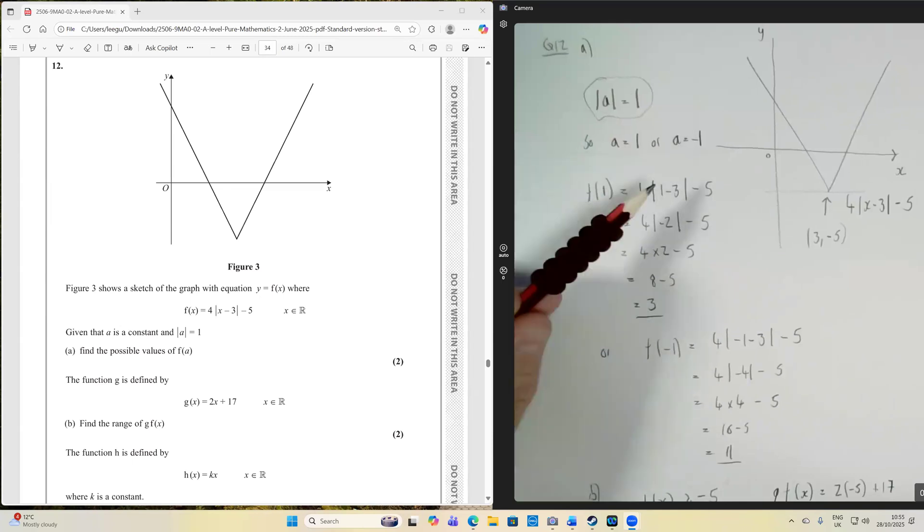So f of 1 is going to be 4 times 1 minus 3 minus 5. 1 minus 3 is minus 2. The modulus of minus 2 is 2. 4 times 2 is 8. 8 minus 5 is 3.